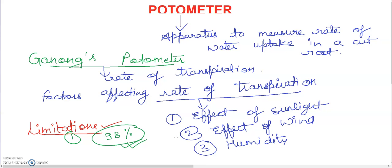These are some limitations of the photometer. In this video, you have to focus on the photometer basics only — what is it? It is an apparatus which is used to measure the rate of water uptake in a cut shoot. Focus on this point basically.